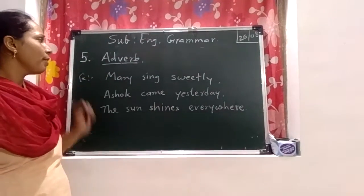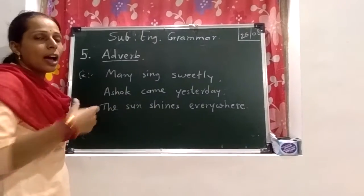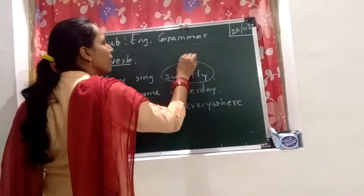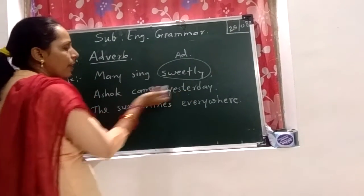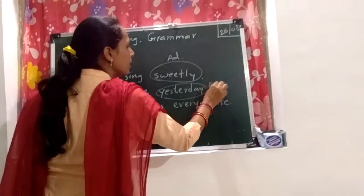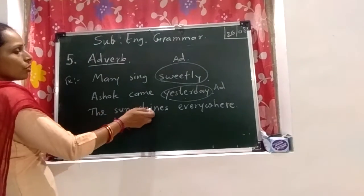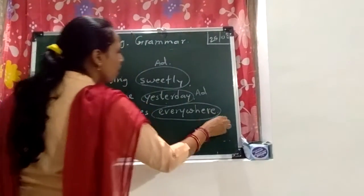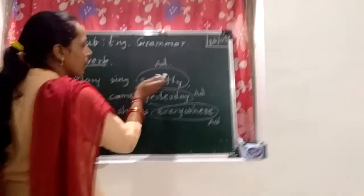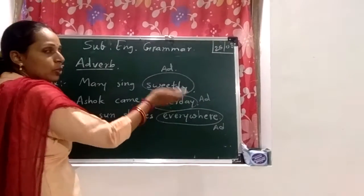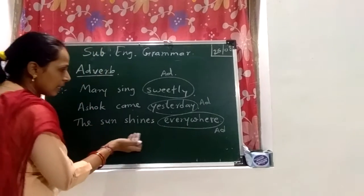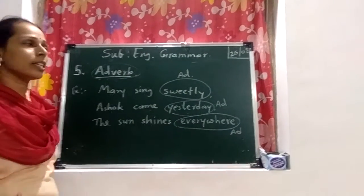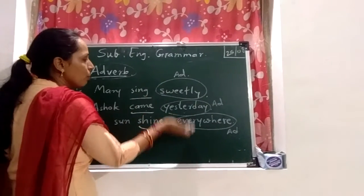Here are some more examples of adverbs. Mary sings sweetly — how does she sing? Sweetly. So 'sweetly' is an adverb. Ashok came yesterday — when did he come? Yesterday. So 'yesterday' is an adverb of time. The sun shines everywhere — where does the sun shine? Everywhere. So 'everywhere' is an adverb. 'Sweetly' shows how the action is done, 'yesterday' shows when, and 'everywhere' shows where. These words are used to describe a verb.